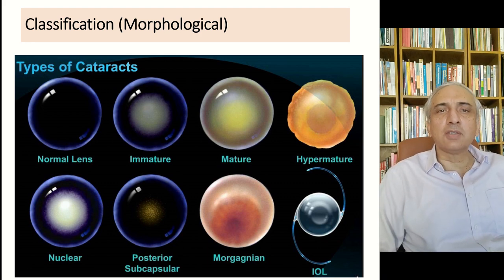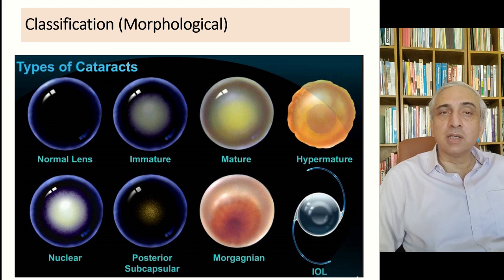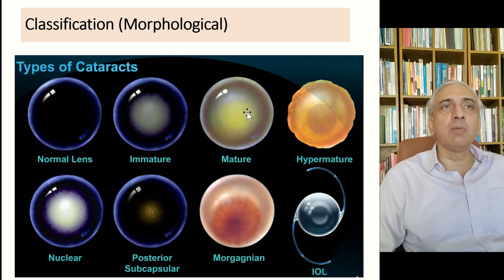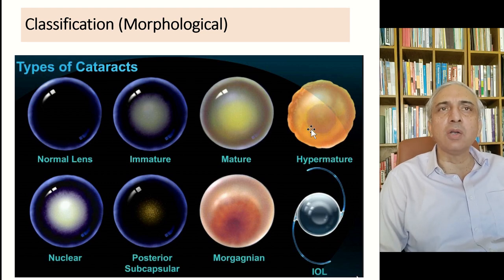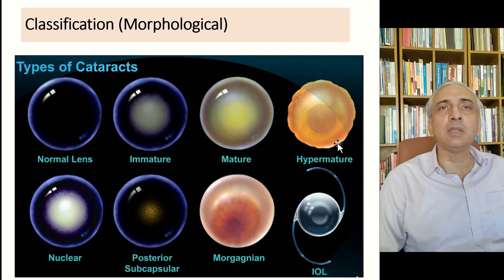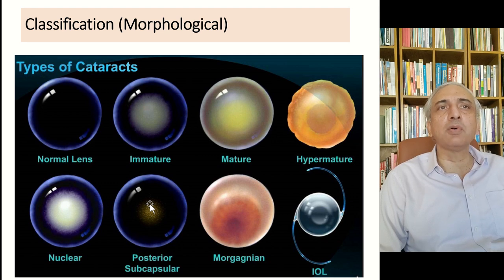Clinically, you can see a cataract on torch examination at undergraduate level, but postgraduate students need to use a slit lamp to identify different types. Normally the lens is clear; an immature cataract has a slightly greenish color; a mature cataract has a more yellowish tinge in the center; and a hypermature cataract shows shrinkage of the cortex. There are two types of hypermature: one that swells and one that shrinks. Nuclear cataract and posterior subcapsular are also identified.